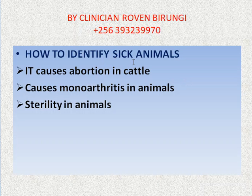How to identify sick animals? We can identify sick animals by the following factors. One: if an animal recently had an abortion, that can be a sign that it had brucella, because brucella tends to cause abortions in cattle. It also tends to cause monoarthritis in animals — that is, you find only one joint is swollen and on one side. For example, the joint on the leg is swollen on one side.